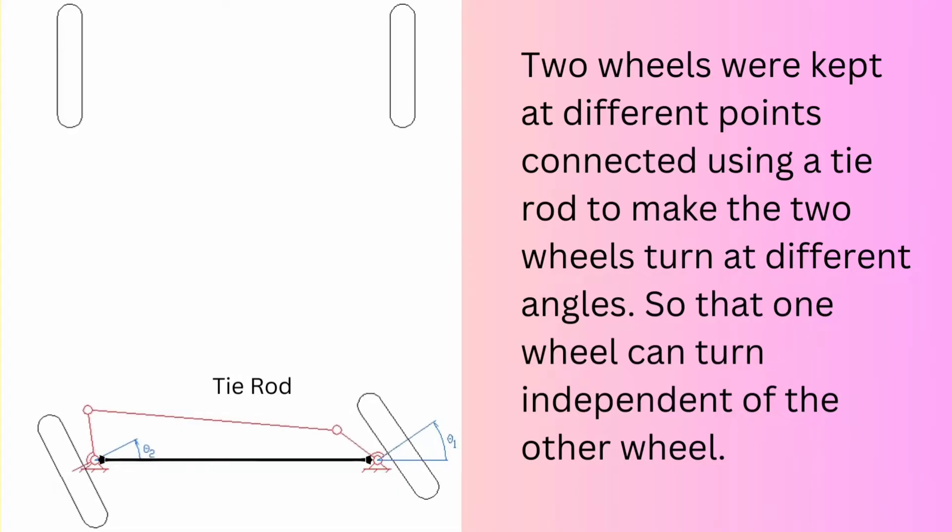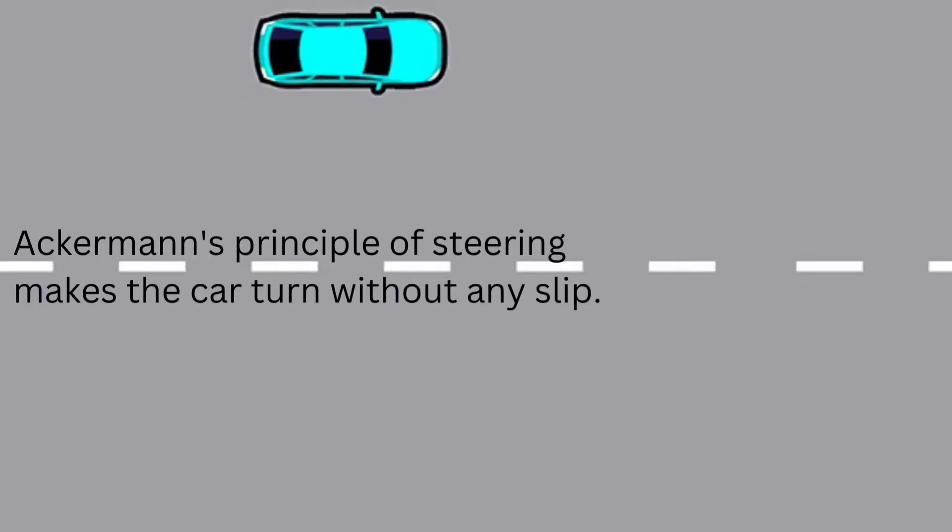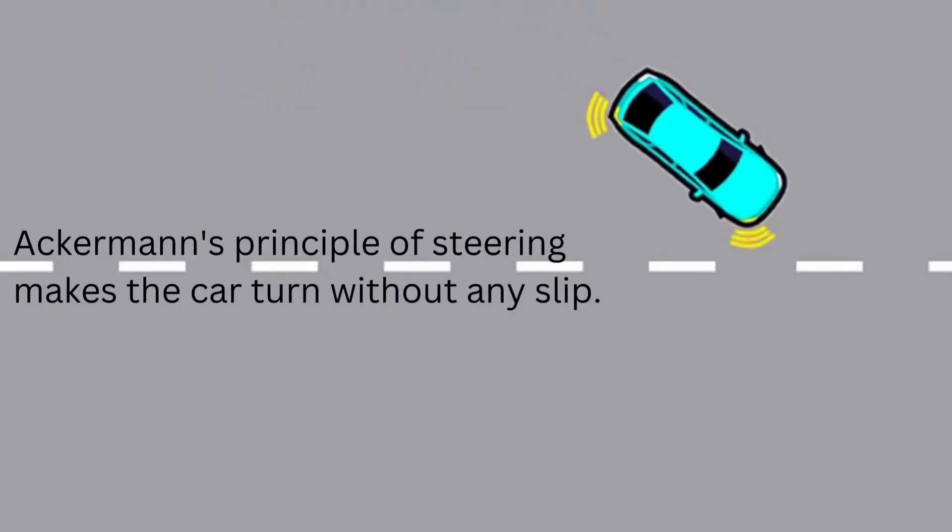In this mechanism, two wheels were kept at different points connected using a tie rod to make the two different wheels turn at different angles, so that one wheel can turn independent of the other wheel. Ackermann's principle of steering makes the car turn without any slip.